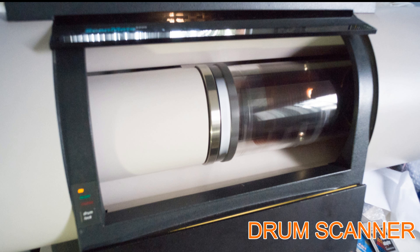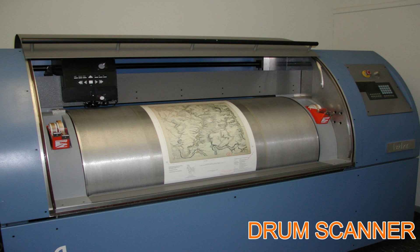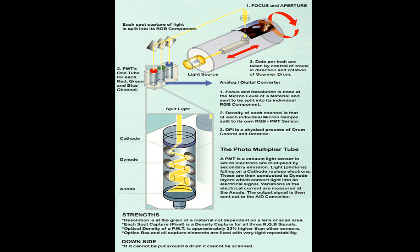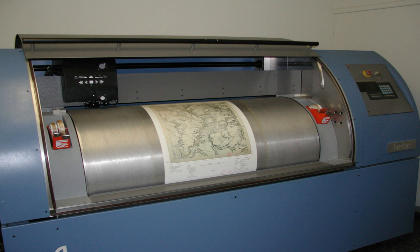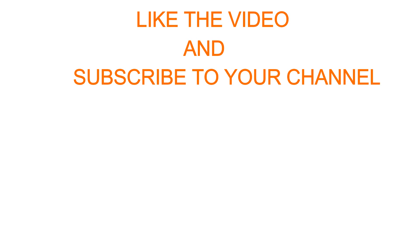The fourth type, drum scanners, are very powerful. They use a technology called a photo multiplier tube, or PMT. In PMT, the document to be scanned is mounted on a glass cylinder. At the center of the cylinder is a sensor that splits the light bounced from the document into three beams. Each beam is sent through a color filter into the PMT, where the light is changed into electrical signals. These signals are used to convert your document into digital format.